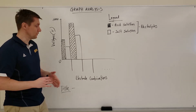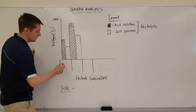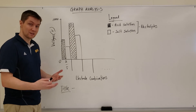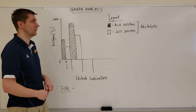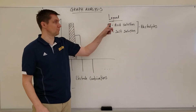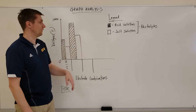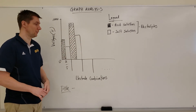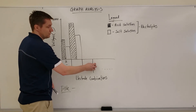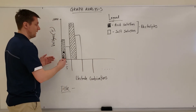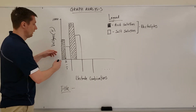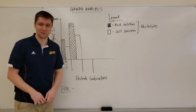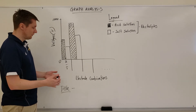This graph is going to be a double bar graph because for each electrode combination tested — say aluminum and copper — we tested it in two different electrolytes. In the legend, lines indicate the acid solution electrolyte and white indicates the salt solution electrolyte. For each electrode combination along the x-axis, there will be two bars showing the voltage reading corresponding to each solution.